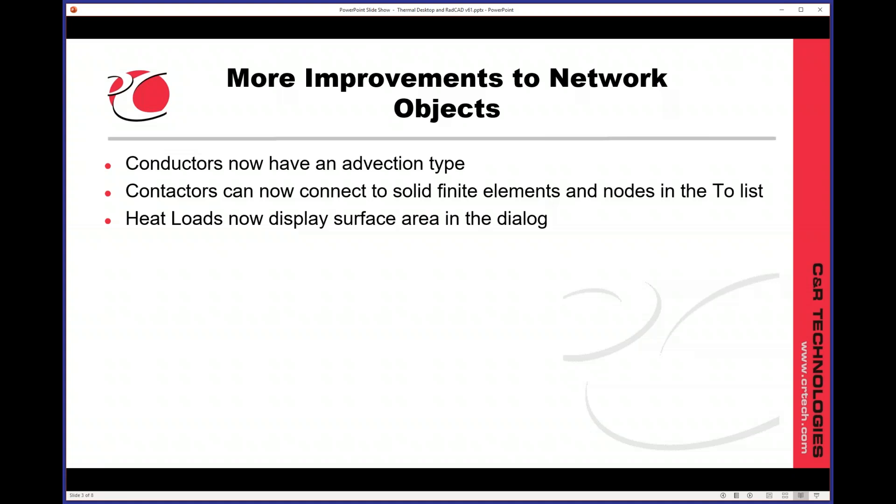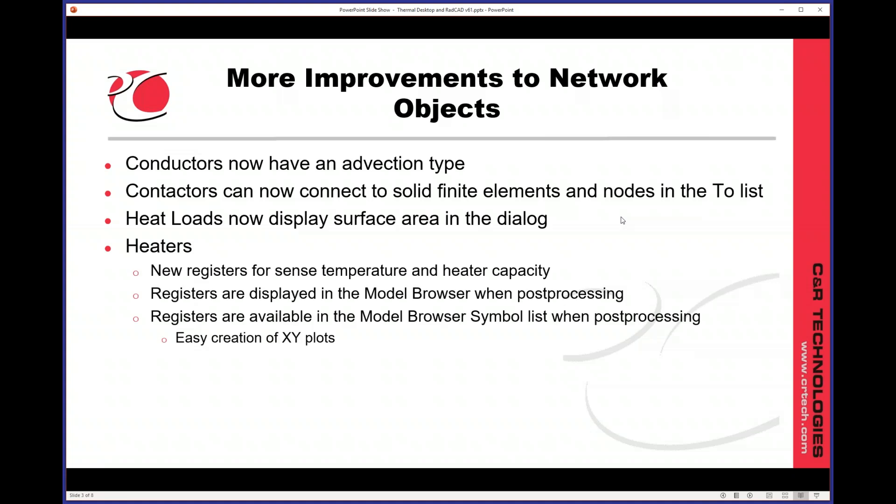Heat loads will now display the surface area in the dialog, so you know how much area you're connecting to. For heaters, there's been a few changes. There are some new registers that tell you what the current sense temperature is and the heater capacity, regardless of what power level you're at. The registers for the heaters are now displayed in the model browser when you're post-processing. So if you list by heaters, select a heater, you'll see the current value of all those registers.